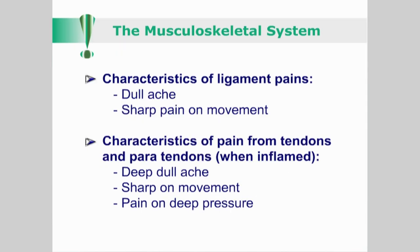Ligaments tend to present with a dull ache, producing sharp pain on movement. Tendons and paratendons can produce similar sensations to ligaments, but if inflamed may produce a deep dull ache, sharp on movement, and pain on deep pressure.